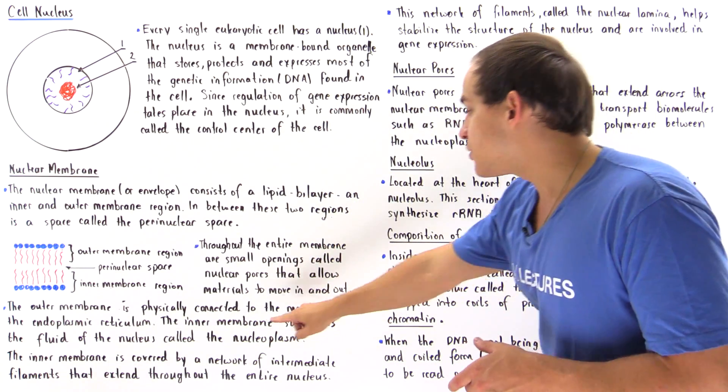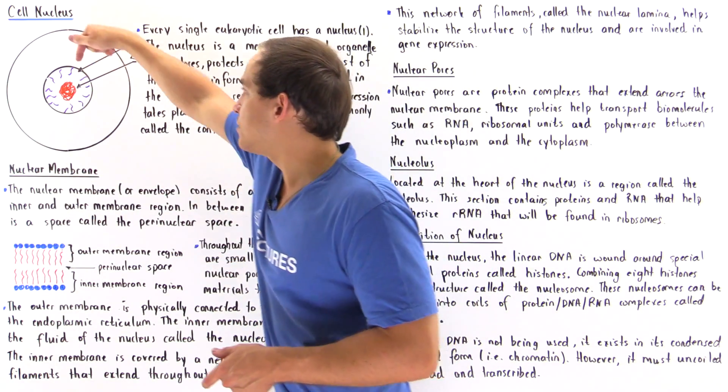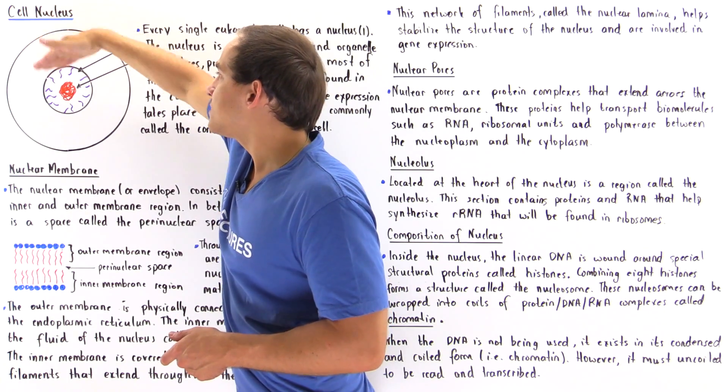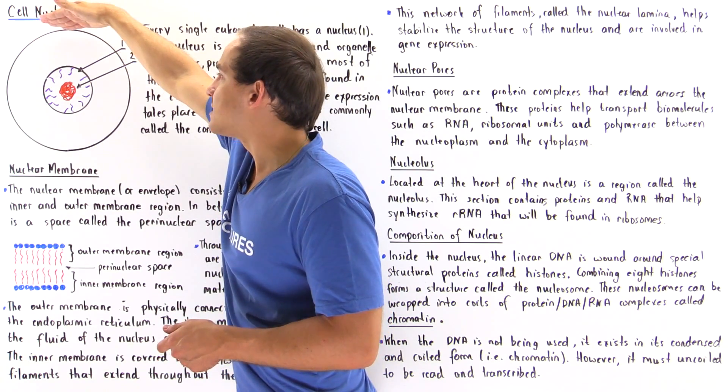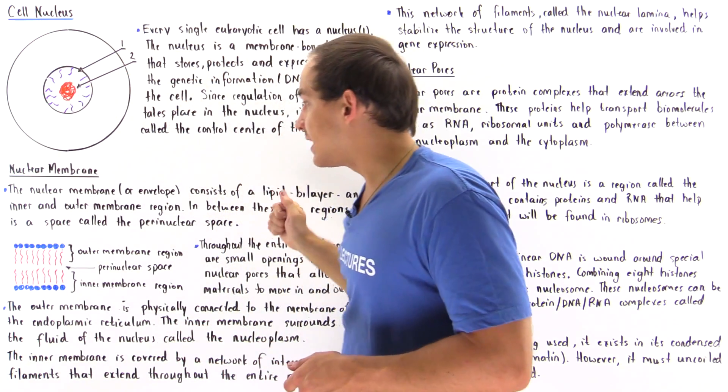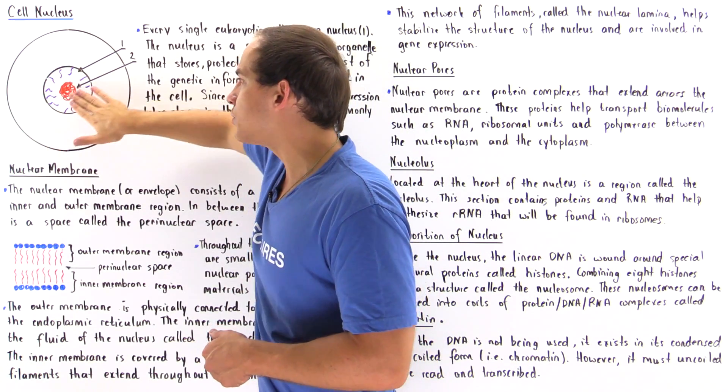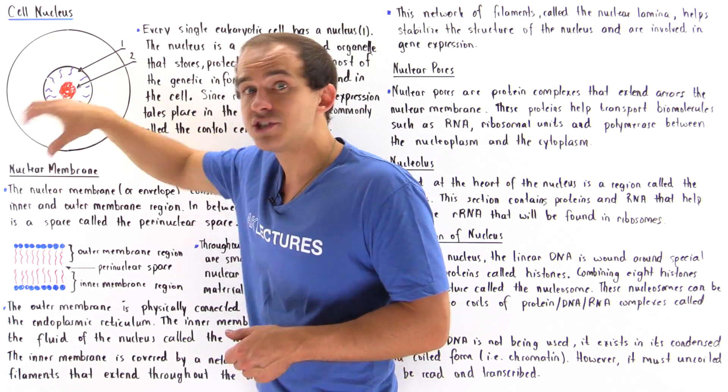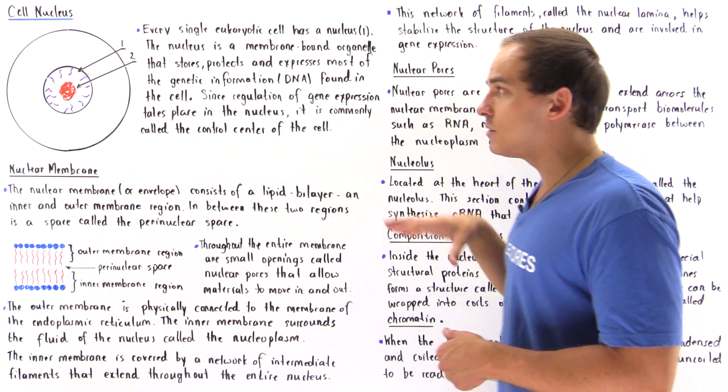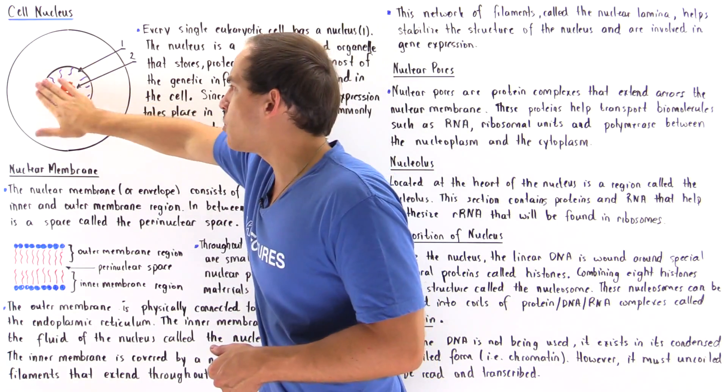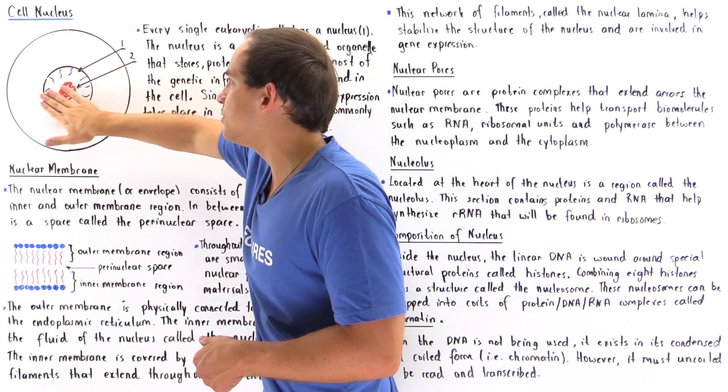The outer membrane is found on the side of our cytoplasm, but the inner membrane is found on the side of the fluid inside our nucleus. The fluid inside the nucleus is known as the nucleoplasm.